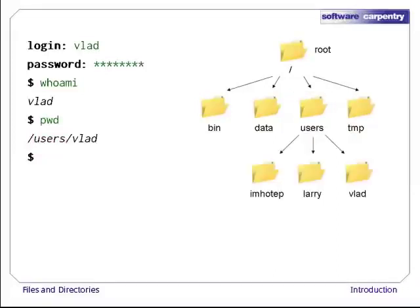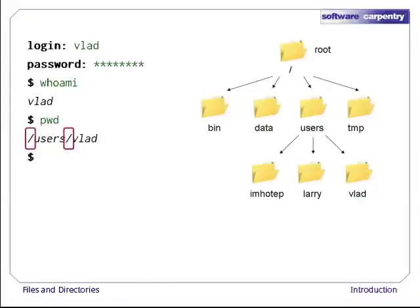Underneath /users, we find one directory for each user with an account on this machine. The mummy's files are stored in /users/imhotep, the wolfman's in /users/larry, and ours in /users/vlad. Notice, by the way, that there are two meanings for the slash character. When it appears at the front of a file or directory name, it refers to the root directory. When it appears inside a name, it's just a separator.